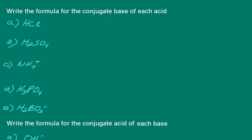Here we're asked to write the formula for the conjugate base of each one of these acids. Let's look at the first one — hydrochloric acid. We want the conjugate base. Hydrochloric acid donates the proton, and when it does, its conjugate base is the chloride ion.